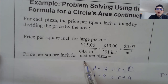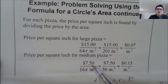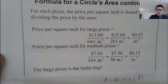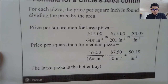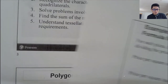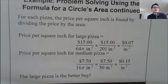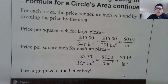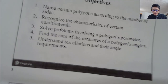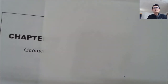The medium pizza has radius 4 inches: Area = π × 4² = 16π ≈ 50 square inches. Price per sq inch = $7.50 ÷ 50 ≈ $0.15. The large pizza has a lower price per square inch — $0.07 versus $0.15 — so the large pizza is the better buy. That is one application of the circle area formula, and that concludes section 10.4.